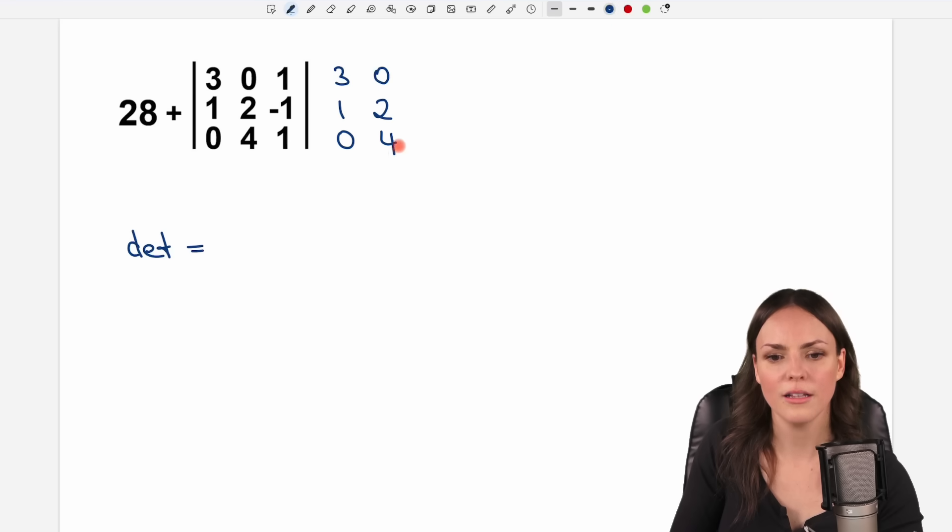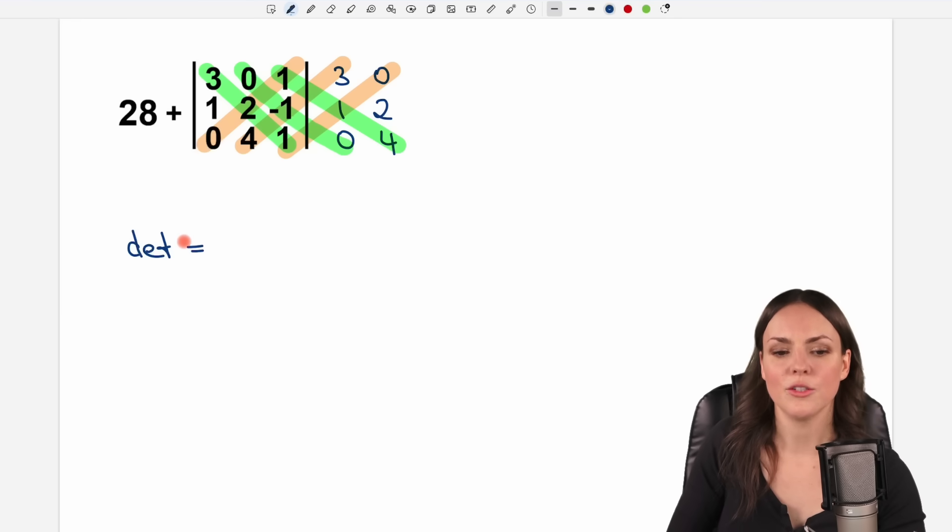And the rule says, take the first two columns and write them down here at the end again. So this is the first column. This is the second column. And now we have these diagonals. Number one, diagonal number two, diagonal number three. And we have the other orange diagonals here, here, and here. And to find the determinant, we now only have to multiply along our diagonals.